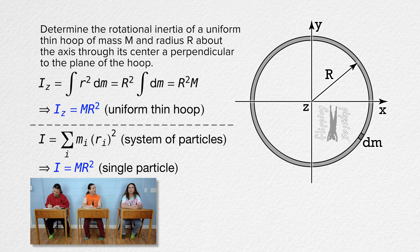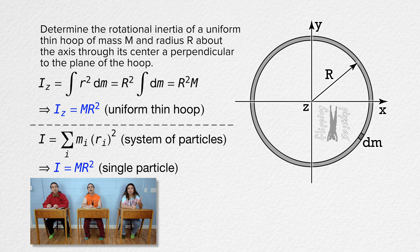Because every particle of the uniform thin hoop dm is located a distance capital R from the axis of rotation. So all the mass of the hoop is located a distance capital R from the axis of rotation. Therefore, the rotational inertia of a uniform thin hoop is the same as the rotational inertia of a single particle with total mass capital M located at a distance capital R from the axis of rotation.